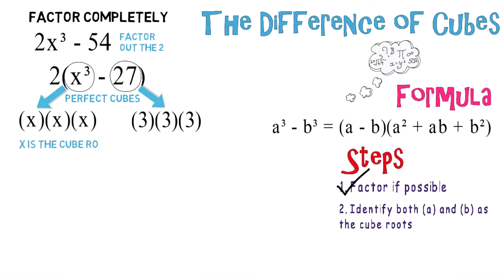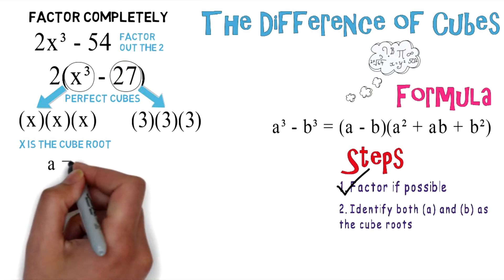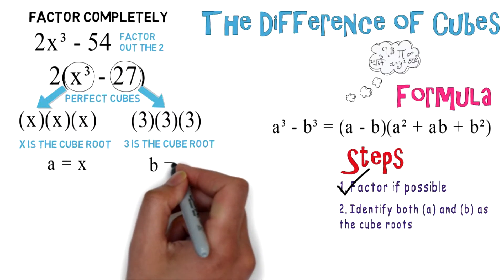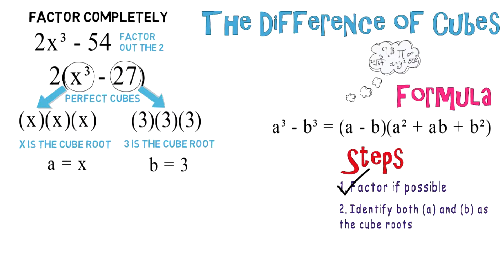So x is the cube root of x to the third power, therefore a equals x. And 3 is the cube root of 27, so b is going to equal 3. And now we can check off that step and move on to the next step.